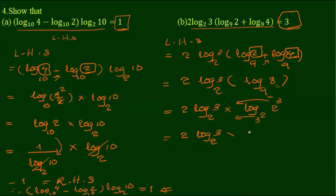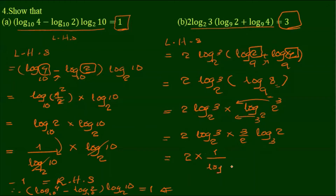We have 1 into 3 by 2 into log 2 base 3. Now, using change of base, 2, 3 — change of base is 1 by output. Now, log 2 base 3 into log 2 base 3 into log 2 base 3.